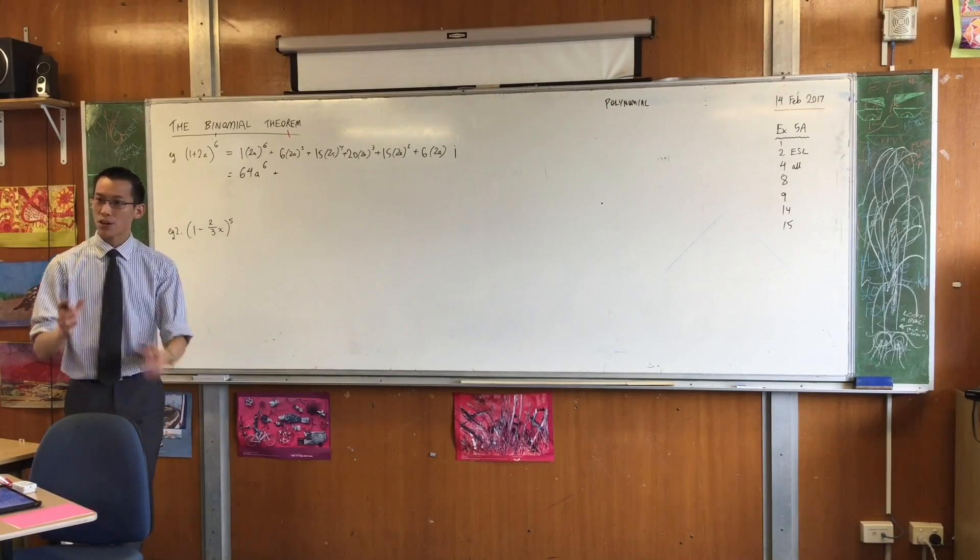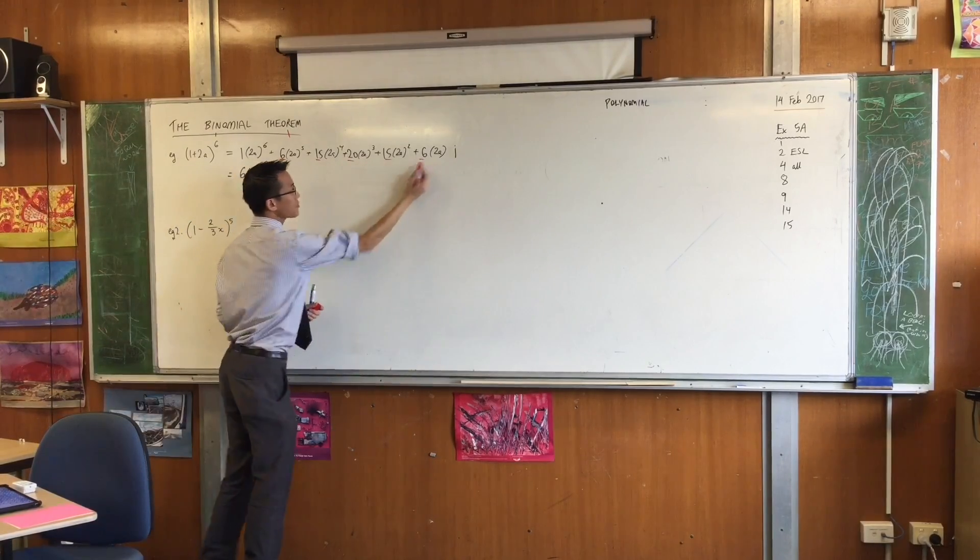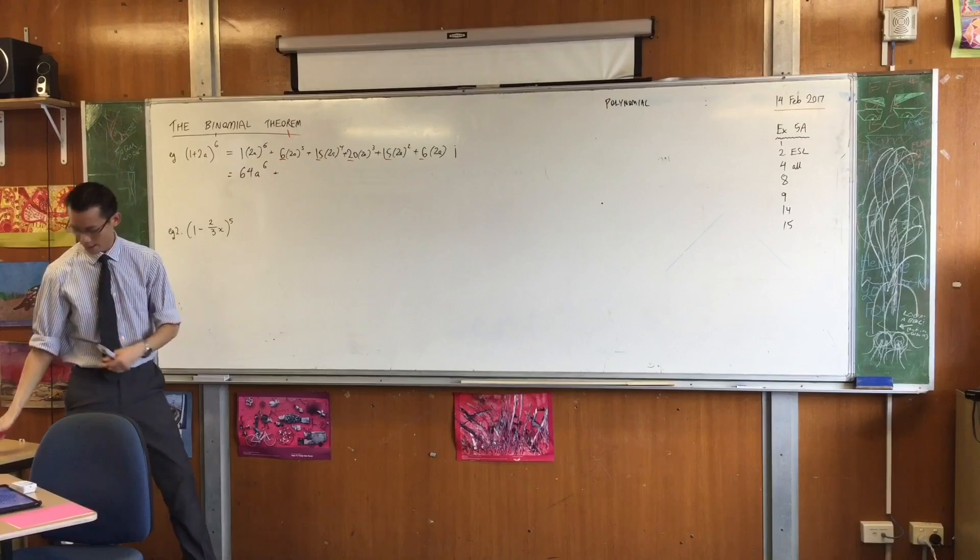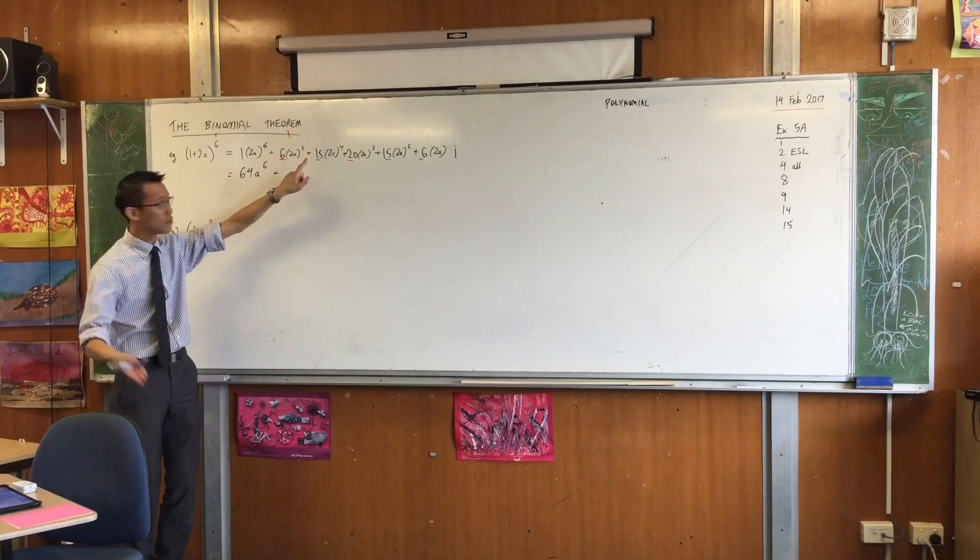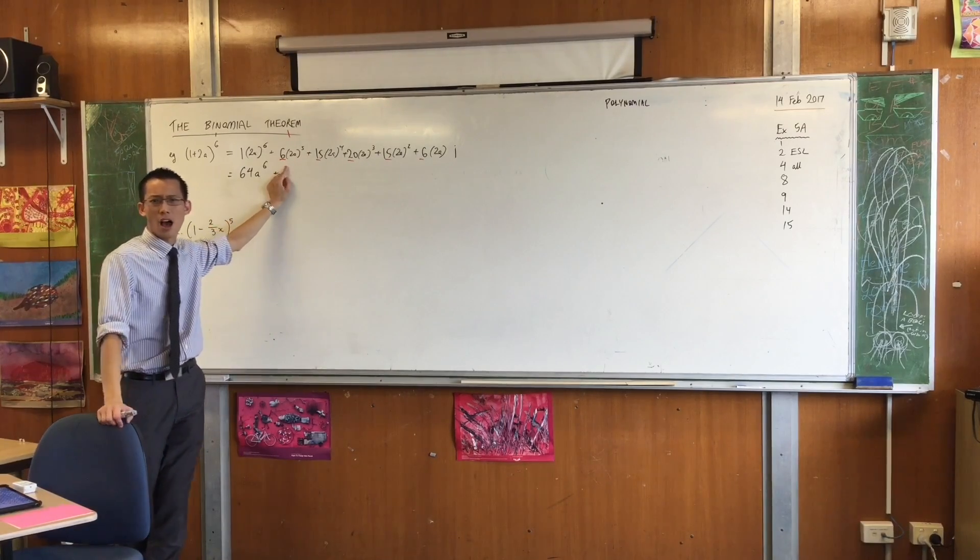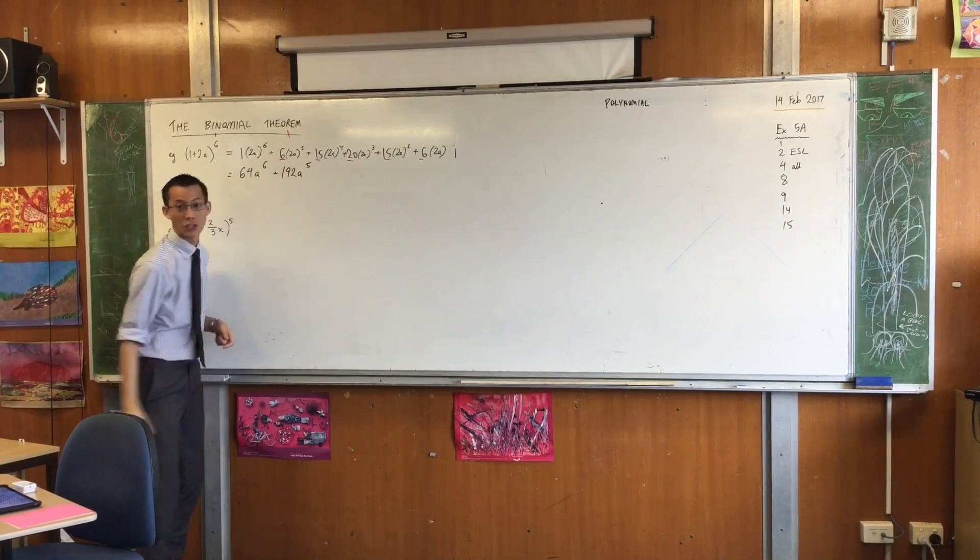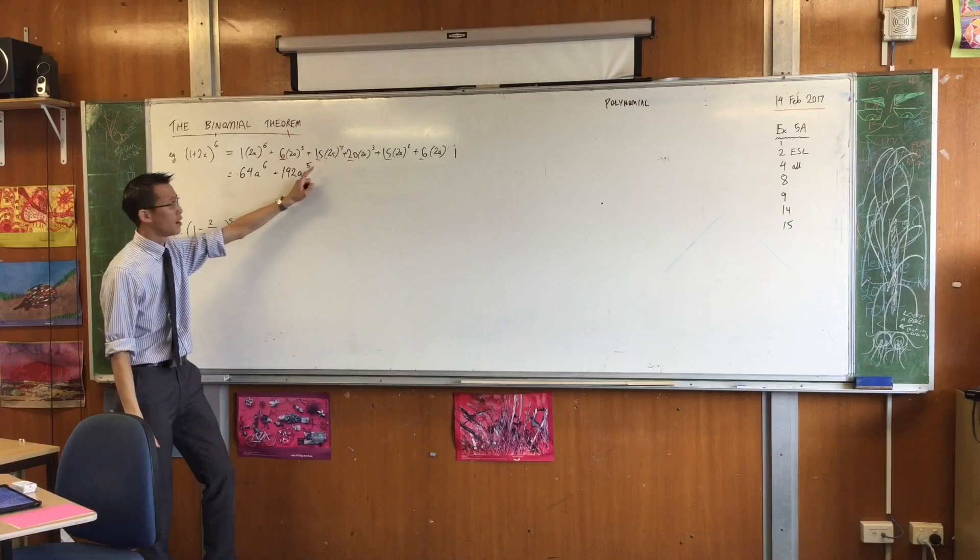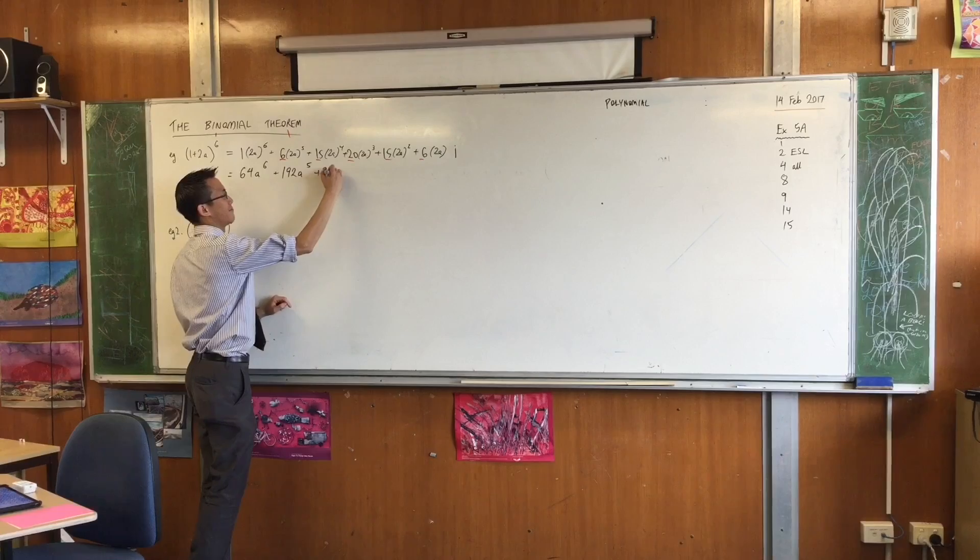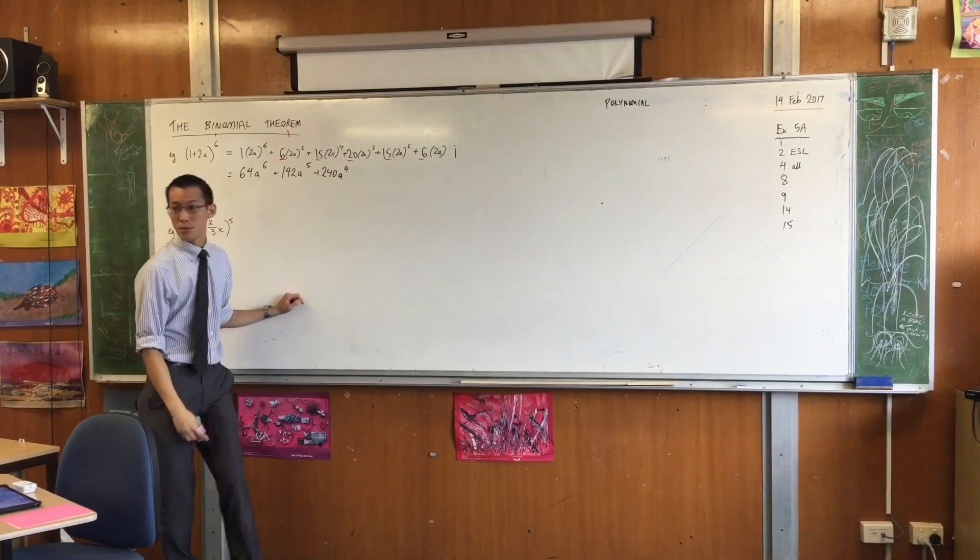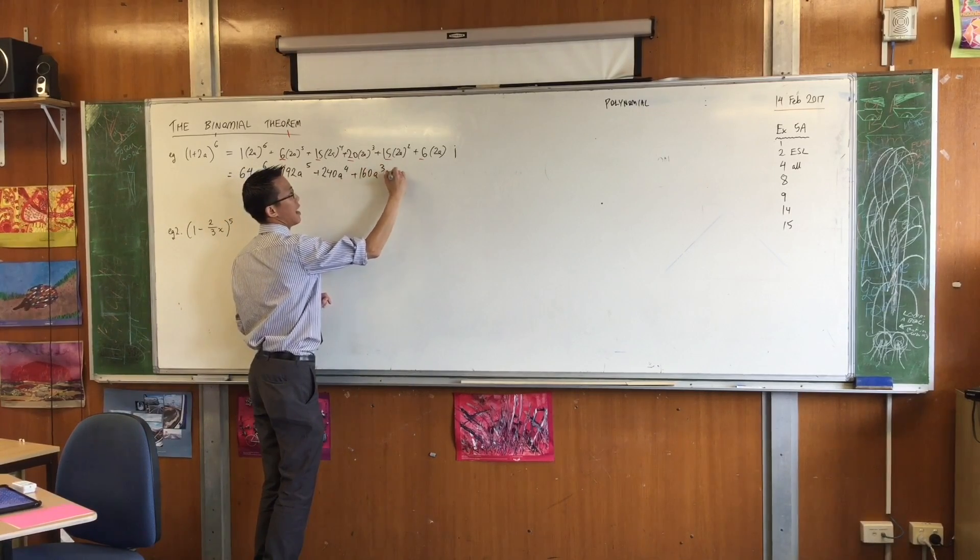Now, here, you've got to be careful because the binomial coefficients, that's what we call these things, these guys here. The binomial coefficients start to interact with these other numbers over here, the other coefficients and their powers. So, 2 to the 5 is 32. 6 lots of 32 is 192. Done. 2 to the 4 is 16. 15 times 16, I think, is 240. 2 cubed is 8, 20 lots of 8 is 160. And, you can sort of keep going from there.